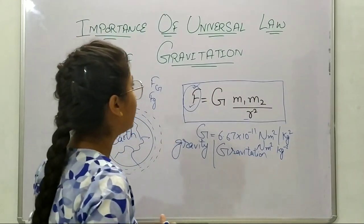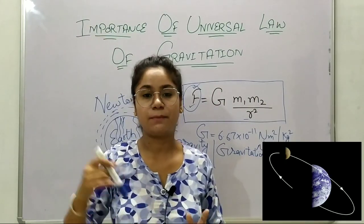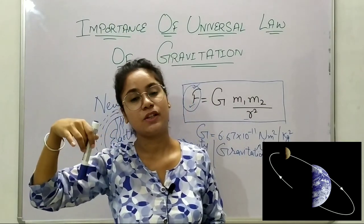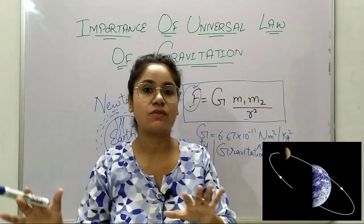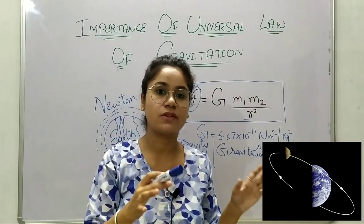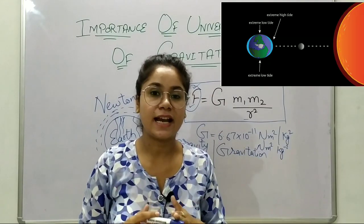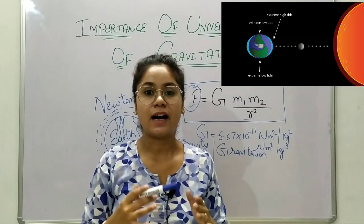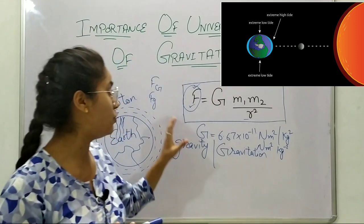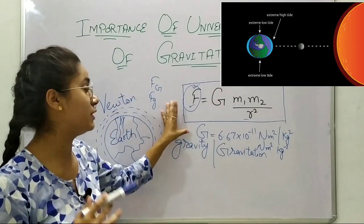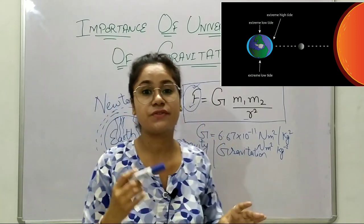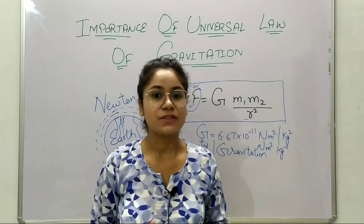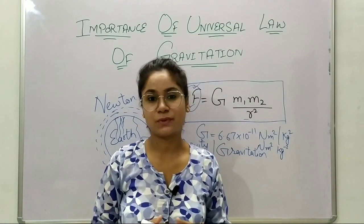The Moon revolves around Earth because of this gravitational force of attraction. All the planets revolve around the Sun because of this force, and even the tides in the ocean are formed because of the gravitational force of attraction of the Sun and Moon.